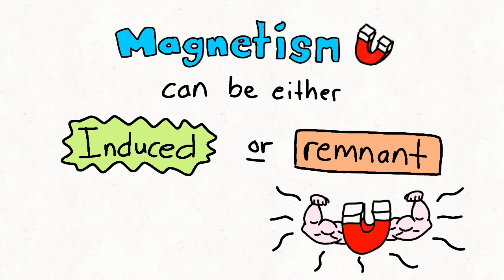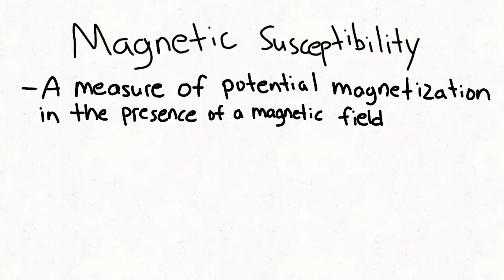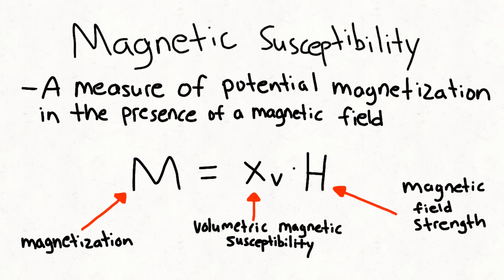The measure of how much a material can actually become magnetized in the presence of a magnetic field is known as the magnetic susceptibility, where M is the measure of magnetization, H is the magnetic field strength, and X is the volumetric magnetic susceptibility.